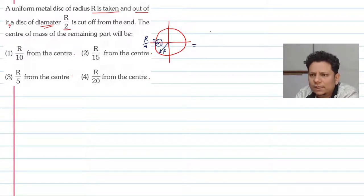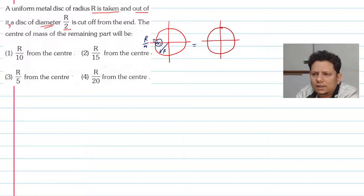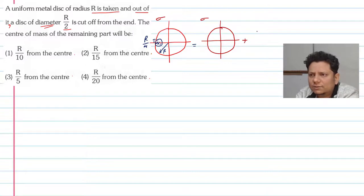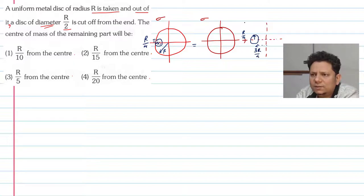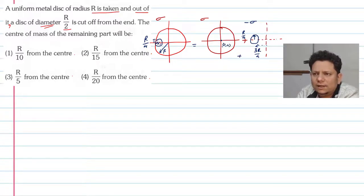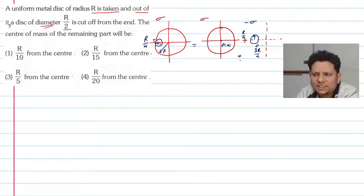This system is equivalent to a complete disc with surface density sigma, plus a small disc of radius R/4 whose center is at distance 3R/4 from the origin, with density minus sigma. This is the negative mass disc approach combined with the positive mass disc.